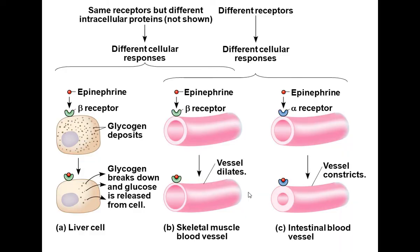With the same receptor but different intracellular proteins being impacted, you can get different responses. Epinephrine acts on the beta receptor in both liver cells and skeletal muscle cells. In liver cells, it causes glucose to form by breaking down glycogen. In skeletal muscle cells, it causes blood vessels to dilate to account for increased blood volume. There is also an alpha receptor on blood vessels — when epinephrine acts on intestinal blood vessels, it causes constriction, minimizing digestion during short-term stress.